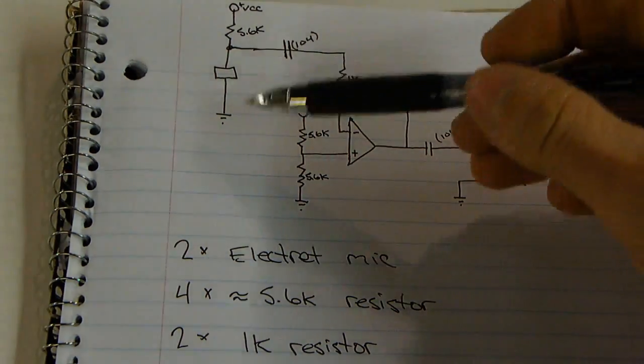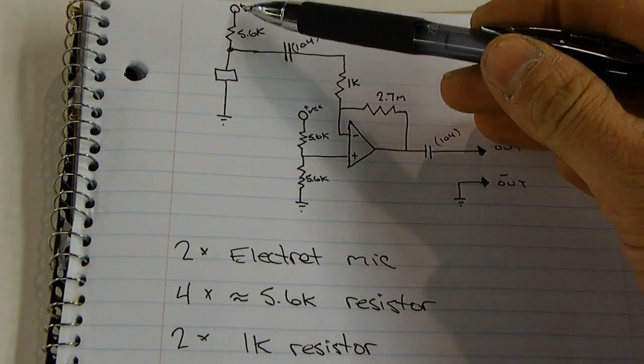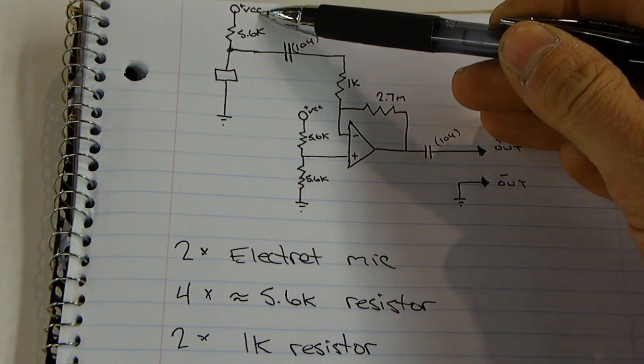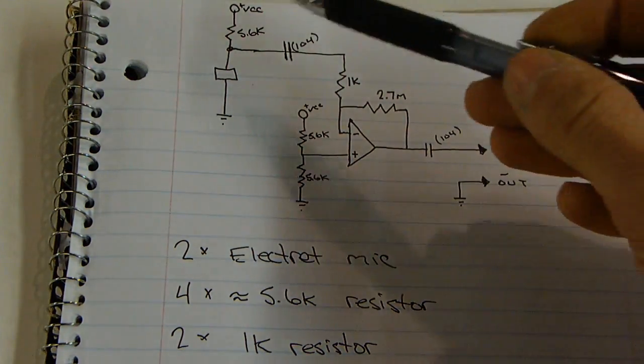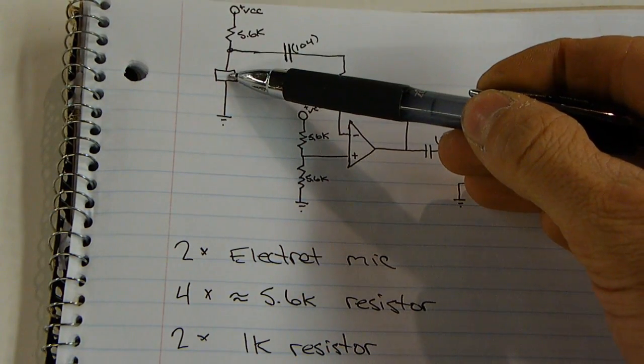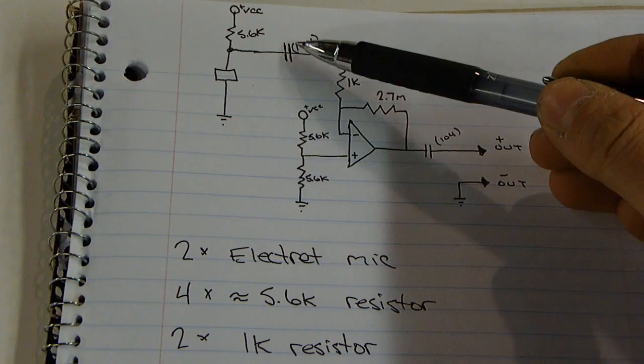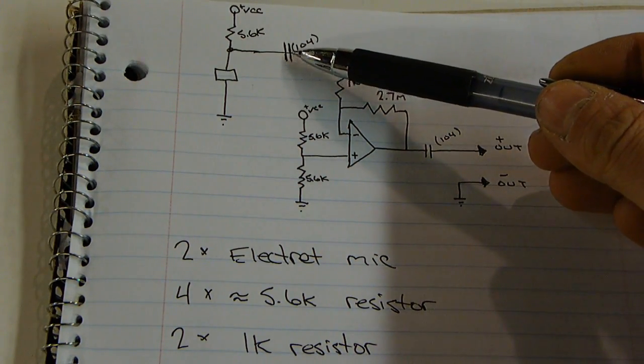Here's how it works. I have a 5.6K resistor. Anytime you see this plus VCC, that means connect to the positive of the battery. That biases this electret mic right here, which goes through this capacitor to filter out any DC.